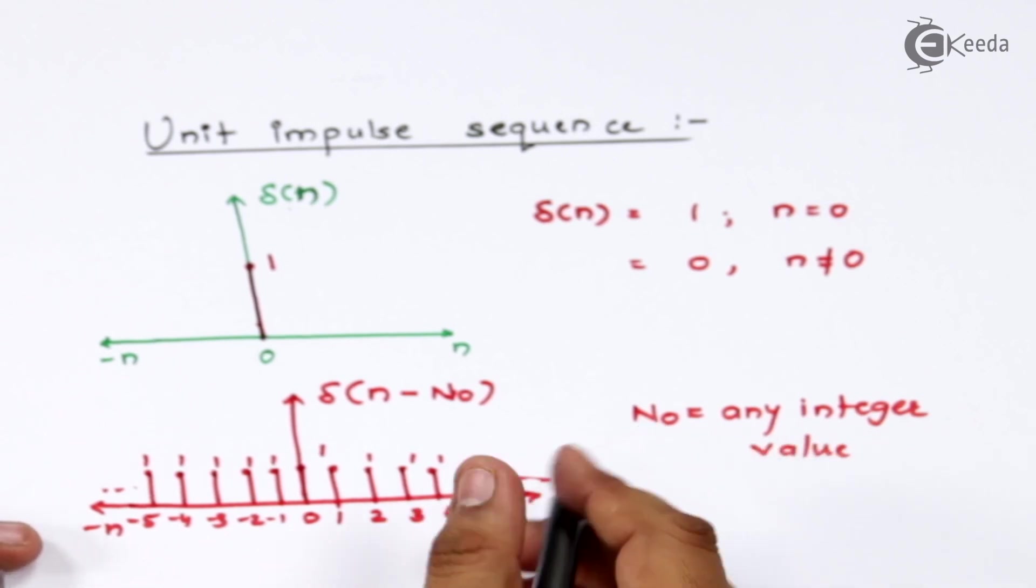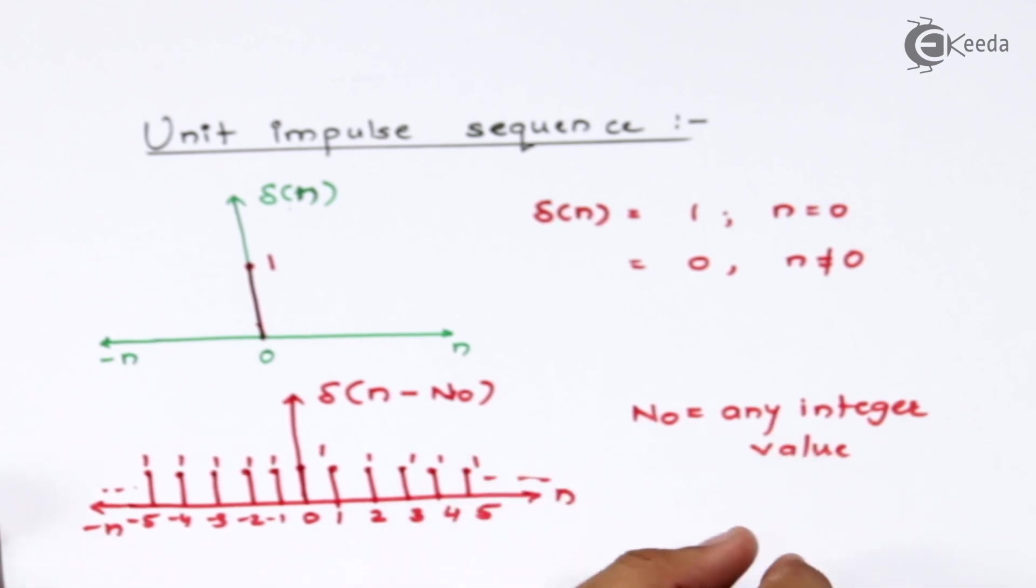Means this value can have positive values as well as negative values also, so don't worry about it. This sequence is basically used to sample any continuous time signals.